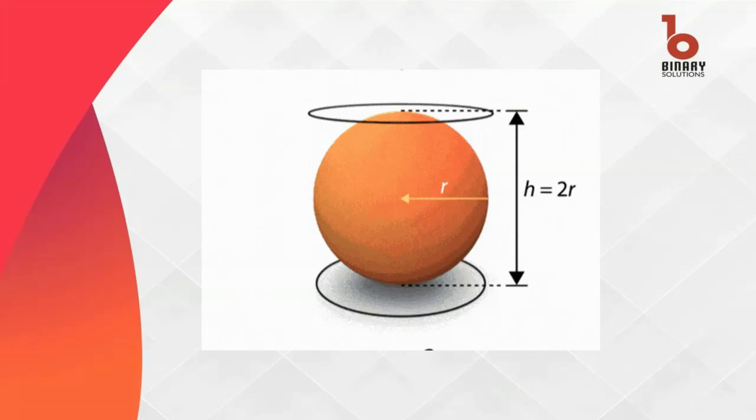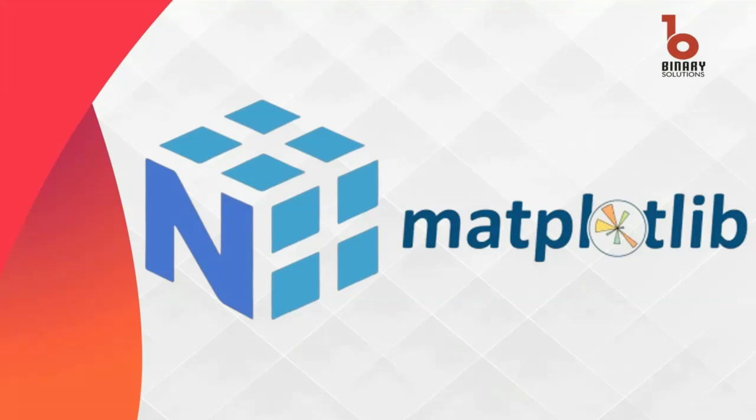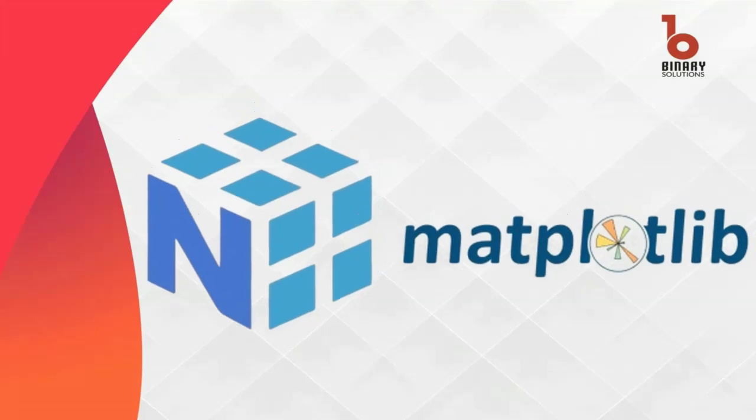The challenge is to efficiently generate a range of radii and calculate the corresponding surface areas and volumes to understand how these properties scale as the bubbles grow. Additionally, you need to visualize these changes to determine whether the surface area and volume grow at the same rate. Using Python's NumPy and Matplotlib libraries, we'll automate these calculations and create plots that reveal the patterns in the relationships between the bubble size, surface area, and volume. This analysis can help optimize the amount of soap used for bubbles of different sizes, leading to cost savings and better product design.